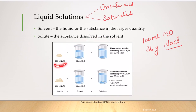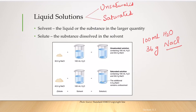For example, if you prepare a solution with 30 grams of sodium chloride in 100 mL of water, it can still take in 6 more grams of NaCl. Because it can take more solute, it is called an unsaturated solution.